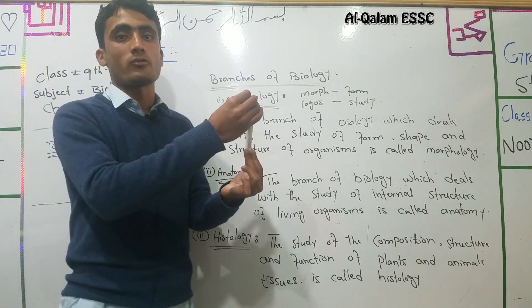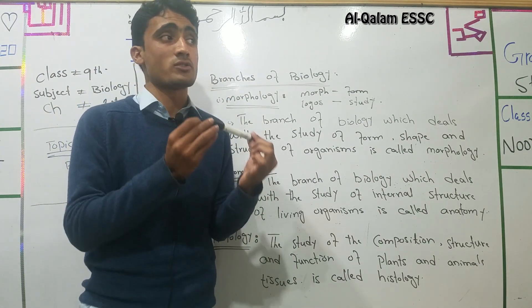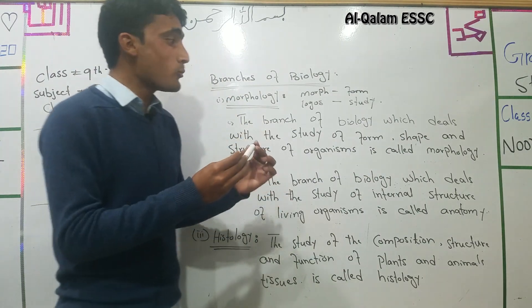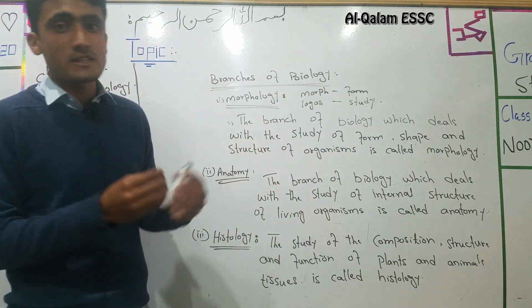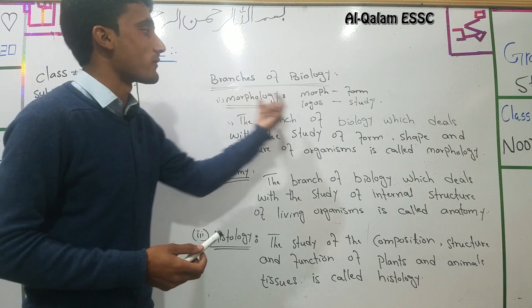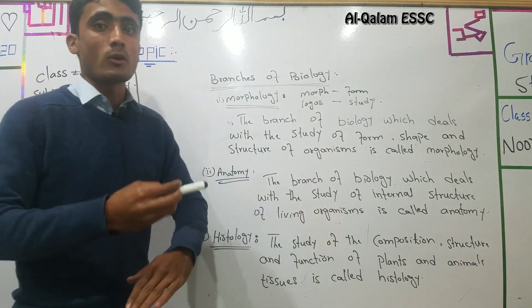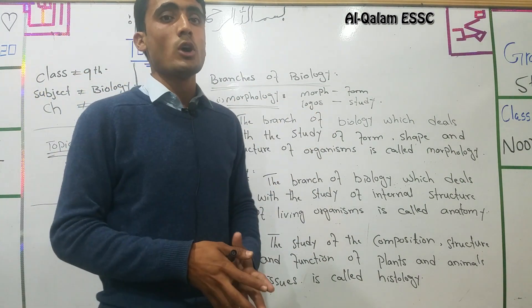For example, studying the external features such as color and physical form. Morphology is the external study of an organism.